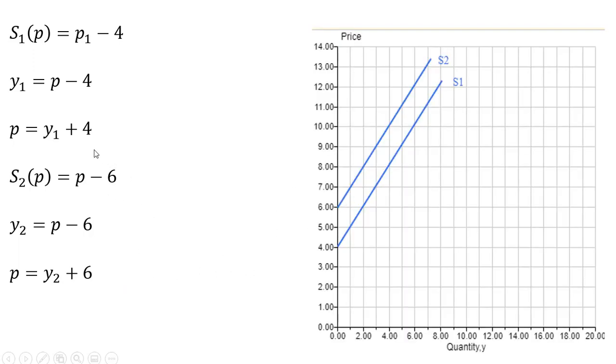Graphing both of these functions, these inverse supply equations, we can see the vertical intercept for Firm 1 occurs at 4. And since there's a 1 on this y term, the slope is just 1.